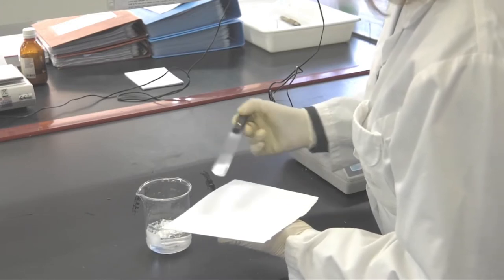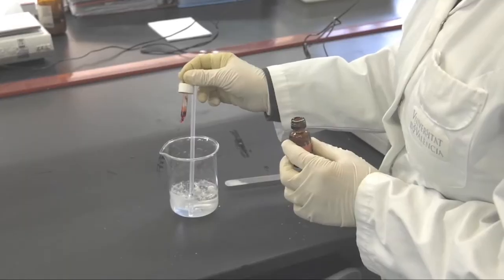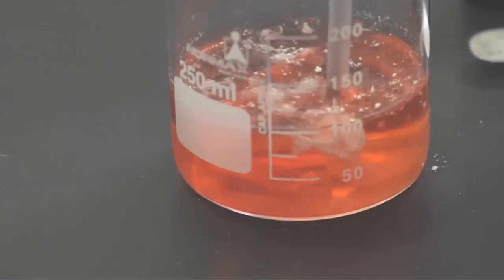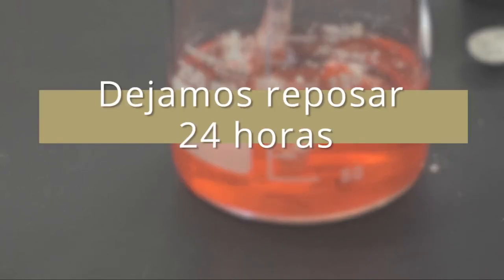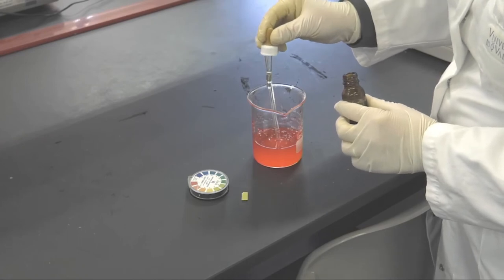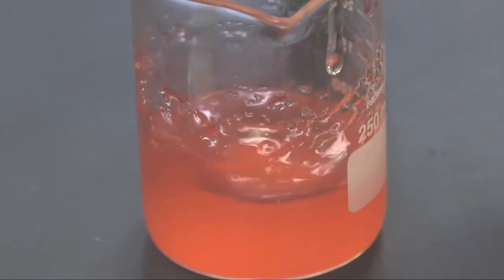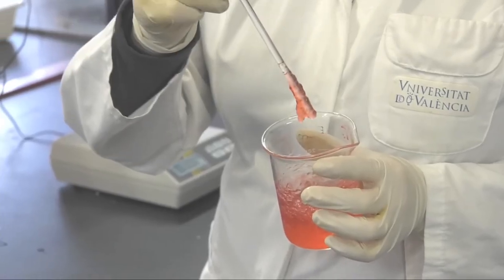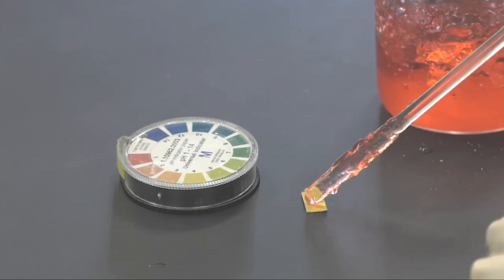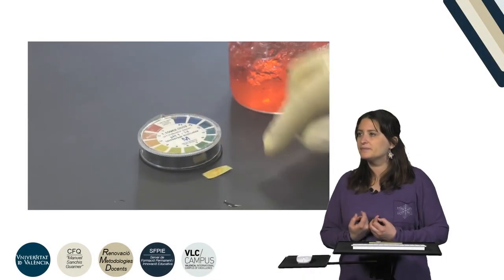We add the carbopol by dispersion to ensure that all flocks are able to get in contact with water, increasing the surface area. If we find some flocks we can reduce their size with the help of a glass rod. We let it hydrate for 24 hours, then add the triethanolamine to change the pH. As you can see, this process increases the viscosity of the final formulation by cross-linking the polymer. Finally, we check the pH and confirm the value is between 6 and 7.